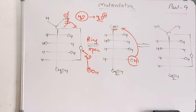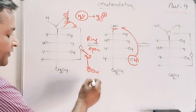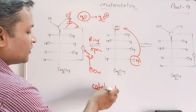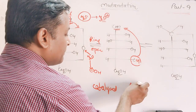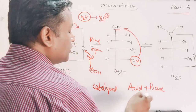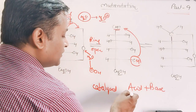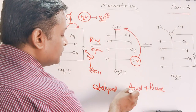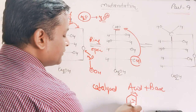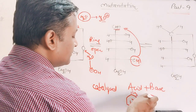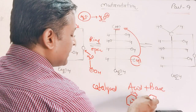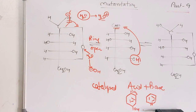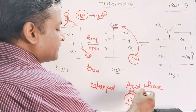Mutarotation is also catalyzed by the presence of acid and base together. Sometimes a mixture of cresol (CS₃OH) and pyridine is taken. This is an important question sometimes asked in exams: why do we take a mixture of pyridine and cresol to catalyze the mutarotation process?